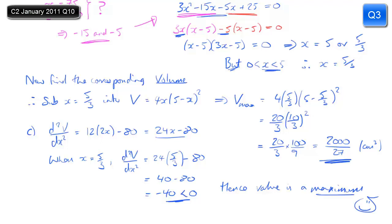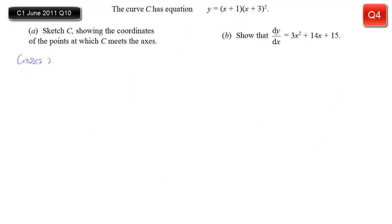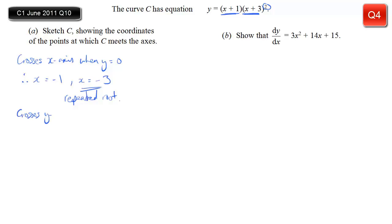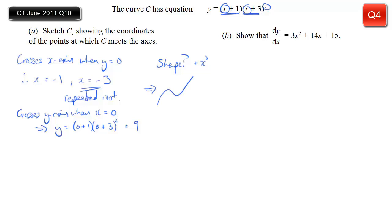We have the equation for curve C, which we recognise as a cubic, and we want to sketch it. The graph crosses the x-axis when y equals 0: the first bracket gives x equals minus 1, and the second bracket gives x equals minus 3. Because of the squared on that bracket, minus 3 is a repeated root, meaning the curve touches the axis there but doesn't cross it. For the y-intercept, substituting x equals 0 gives 1 times 9 equals 9. The positive x cubed term means the graph is the standard positive cubic shape.